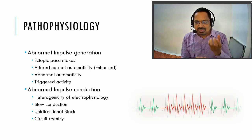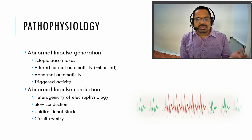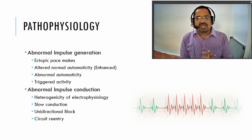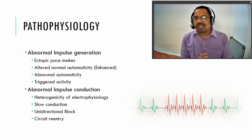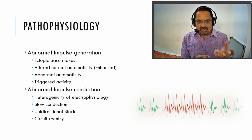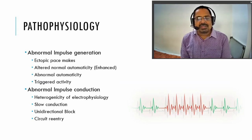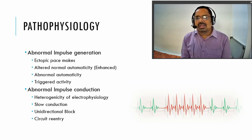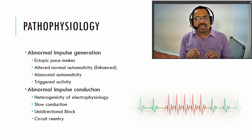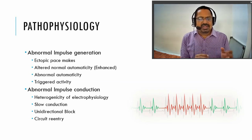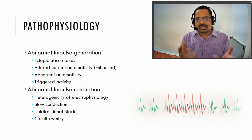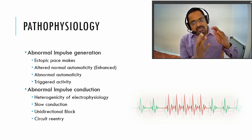Either the generated impulse is abnormal or the conducted impulse is abnormal. For impulse generation, ectopic pacemaker activity causes disturbance — there is an alteration in automaticity. The SA node has automaticity, and that automaticity is altered or triggered, leading to formation of ectopic pacemakers. Ectopic pacemaker means different cells are also generating impulses, and they themselves are rhythmic but along with the SA node they become totally arrhythmic.